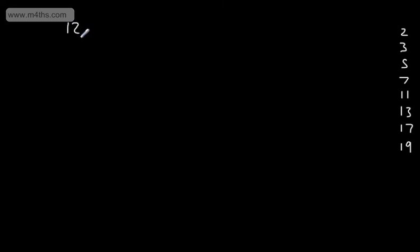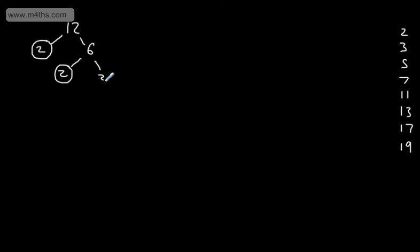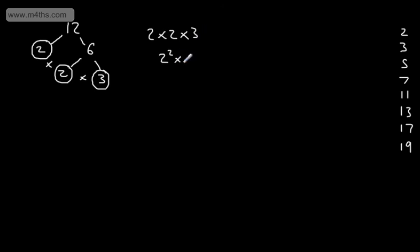So what I'm going to do is take 12 and write 12 as a product of its prime factors. All we're going to do is a factor tree. Can I divide this by the first prime number of 2? Yes. I now circle 2, and that leaves me with 6. Can I divide 6 by 2? Yes, that leaves me 3. All of these are now prime numbers, so we put a multiplication between them, and we say that 12 as a product of its prime factors is 2 × 2 × 3, or 2² × 3.